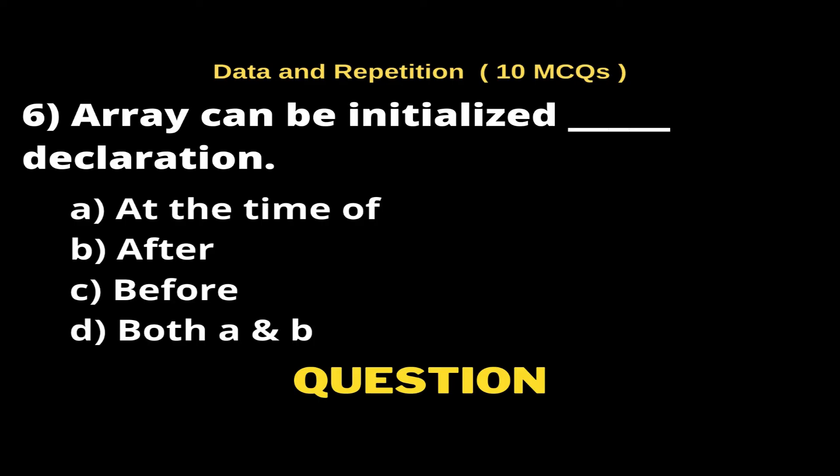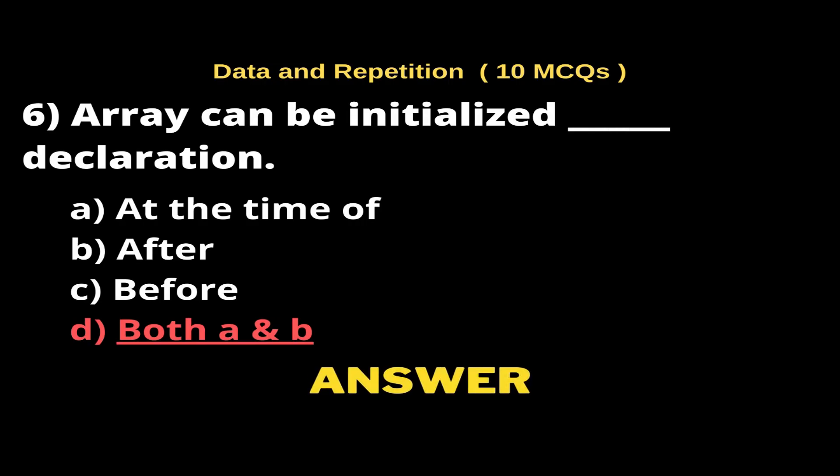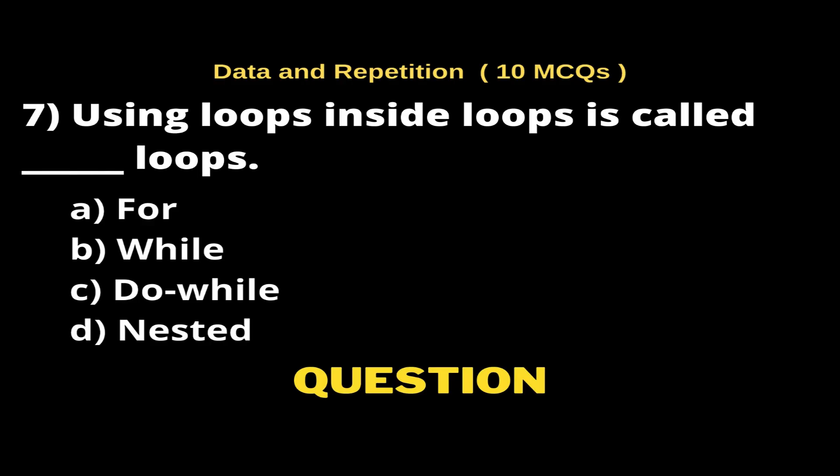Question 6: Array can be initialized ___ declaration. Options: A) At the time of, B) After, C) Before, D) Both A and B. The right answer is Option D, Both A and B.